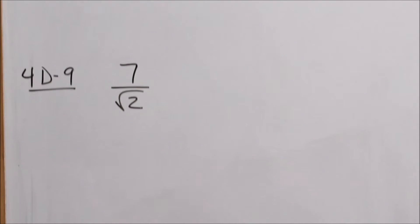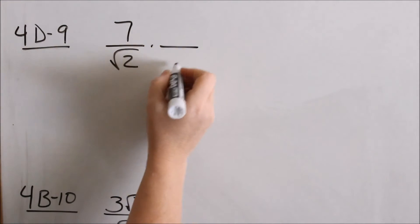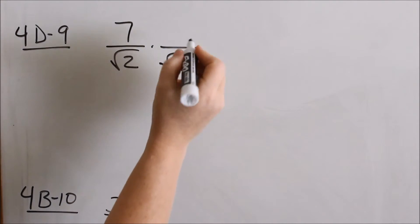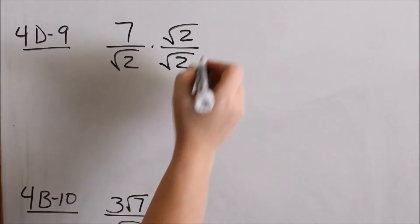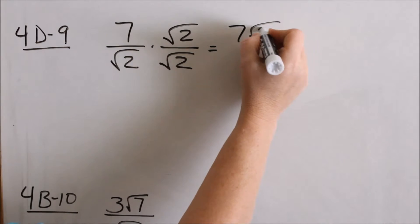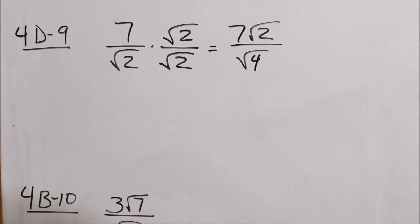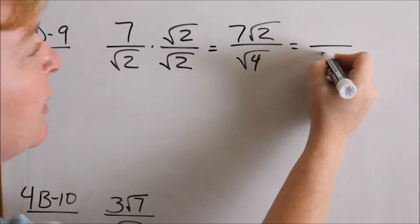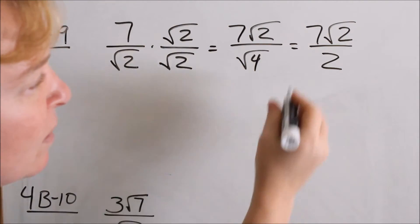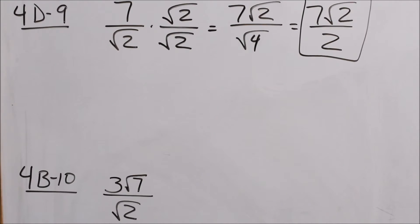Now look at 4d9: 7 over square root of 2. How do you get rid of the radical in the denominator? You multiply the radical by itself — square root of 2 times square root of 2. Whatever I do with the denominator, I have to do with the numerator. Multiplying fractions, that would be 7 times square root of 2 in the numerator. Square root of 2 times square root of 2 is square root of 4, and square root of 4 is just 2. I check to see if 7 over 2 reduces — it doesn't, so I leave it like that. I've gotten rid of the radical in the denominator.